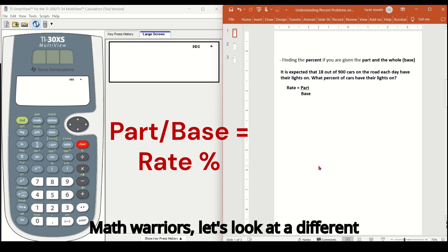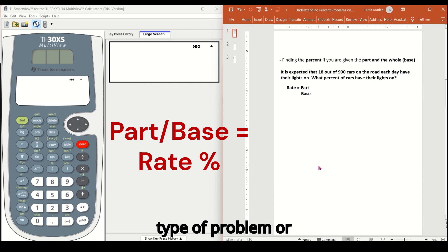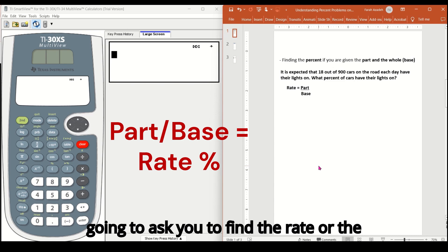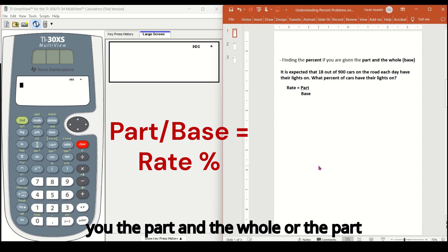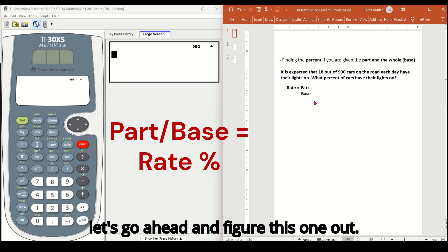Math warriors, let's look at a different type of problem or equation that you will see on the exam where they're going to give you two of the three elements, but they're going to ask you to find the rate or the percent because they're going to give you the part and the whole or the part and the base. So let's look at that first example. It is expected that 18 out of 900 cars on the road each day have their lights on. What percent of cars have their lights on?